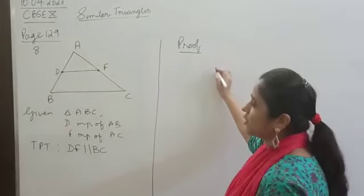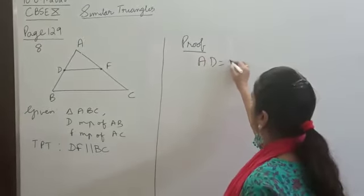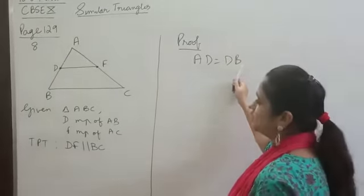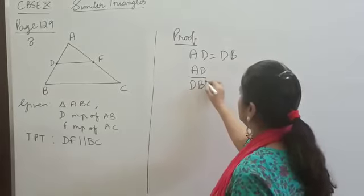Let's start like this. We know that D is the midpoint of AB. Right? So, which means AD is equal to DB. So, from this we have AD by DB is equal to 1.